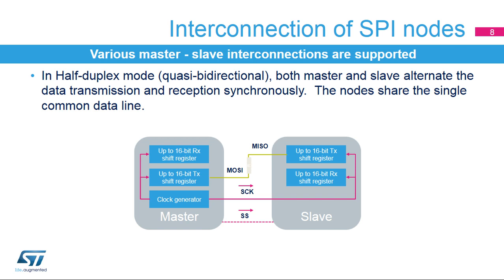The master and slave have to alternate their transmitter and receiver roles synchronously when having a common data line. It is common to add a serial resistor on the half-duplex data line to prevent possible temporary short-circuit connections, since master and slave nodes are not usually synchronized.